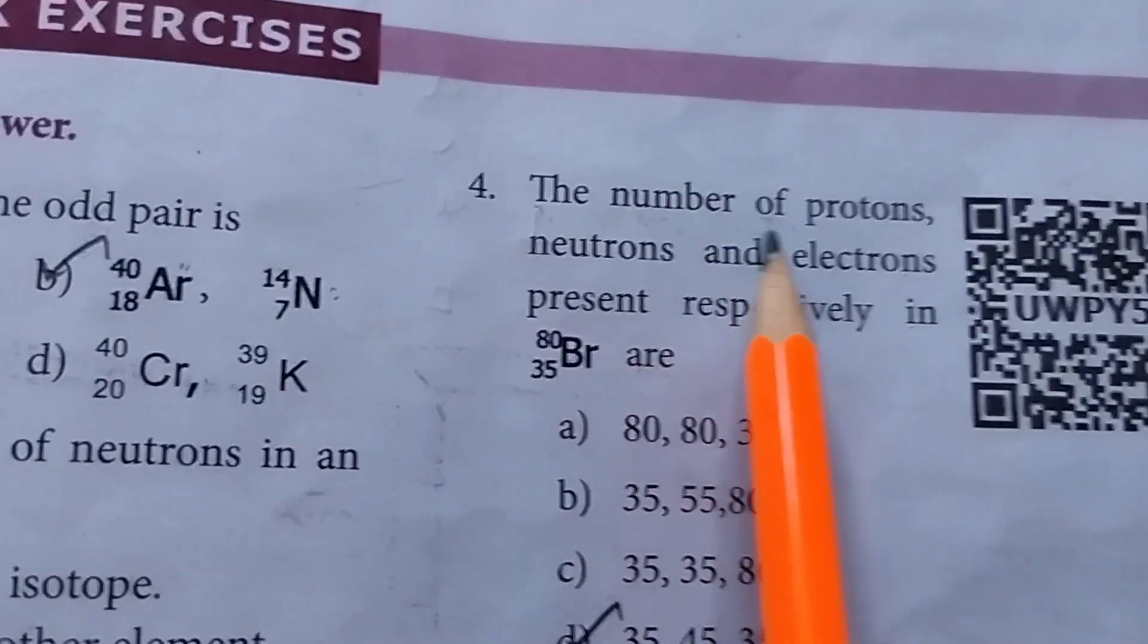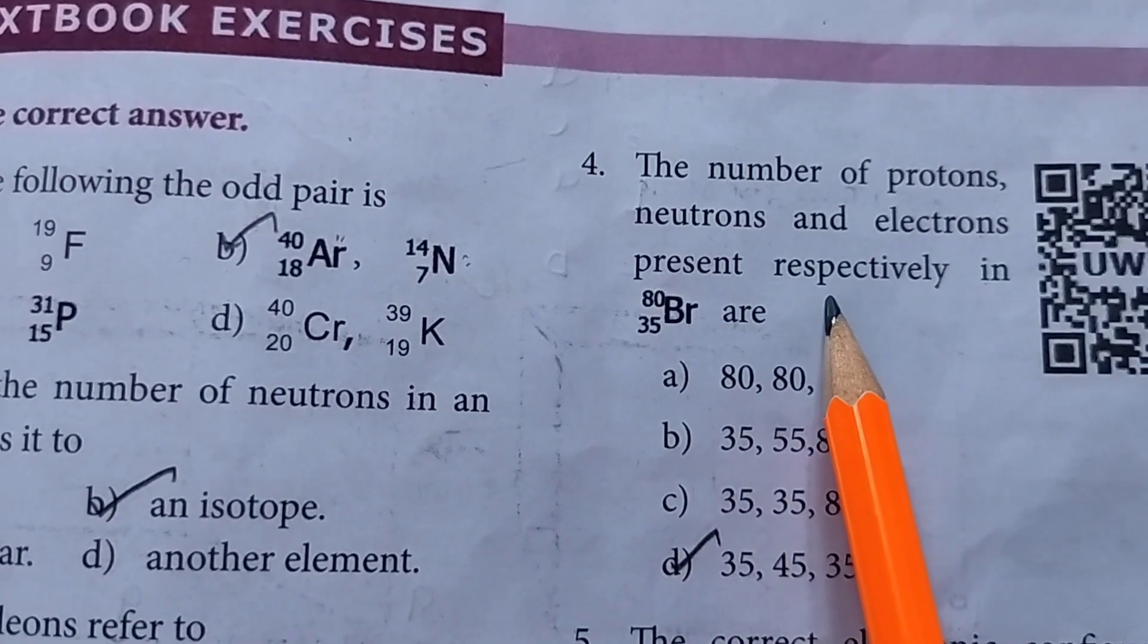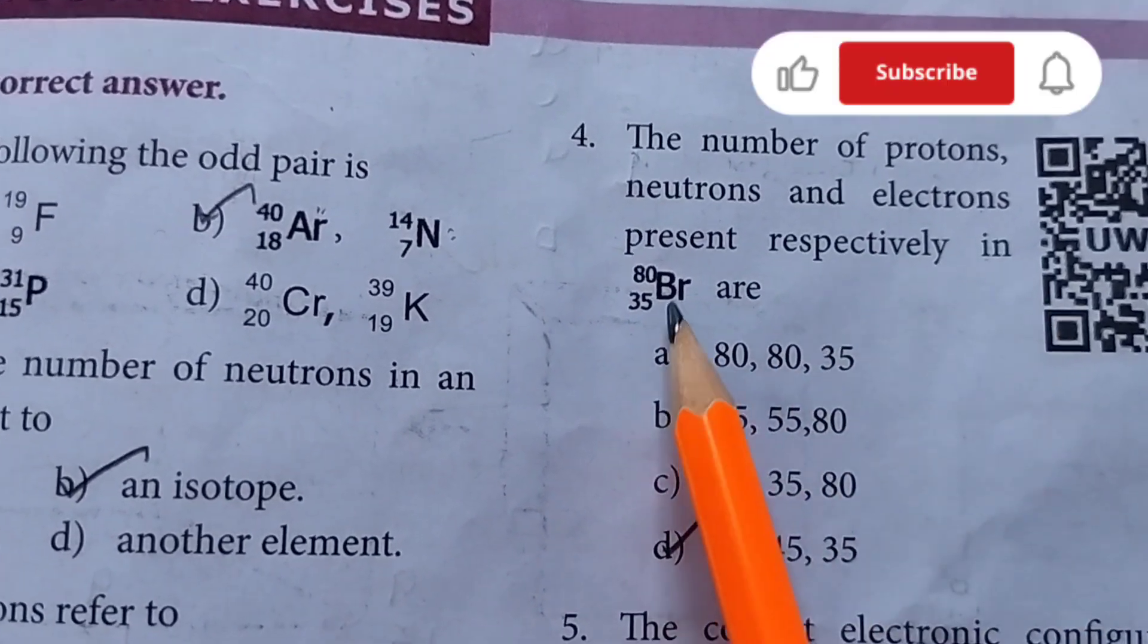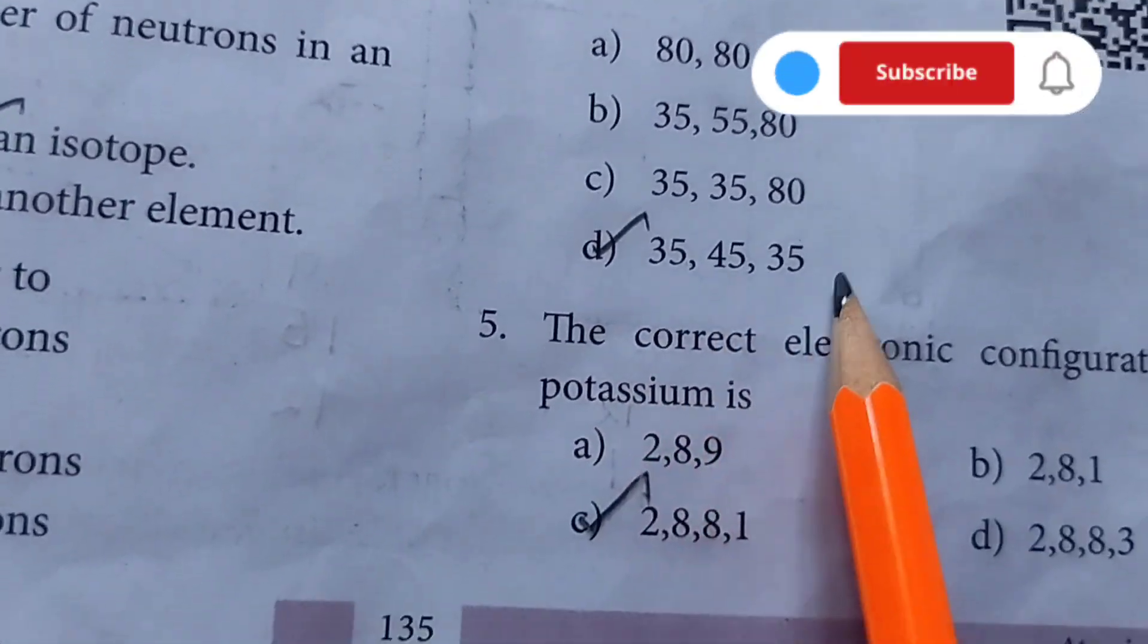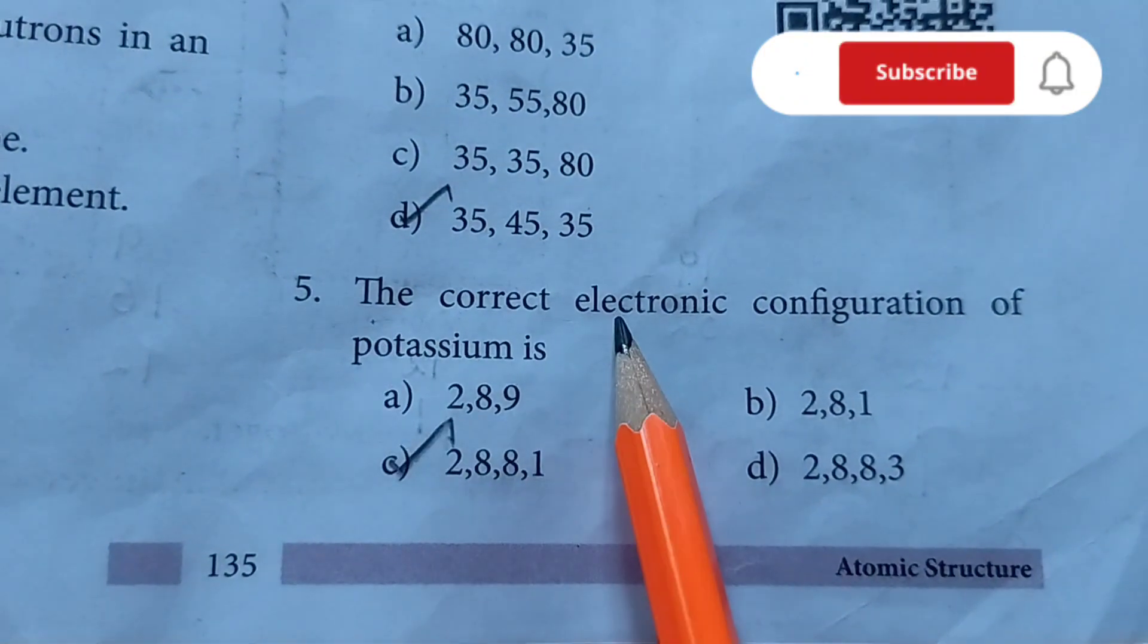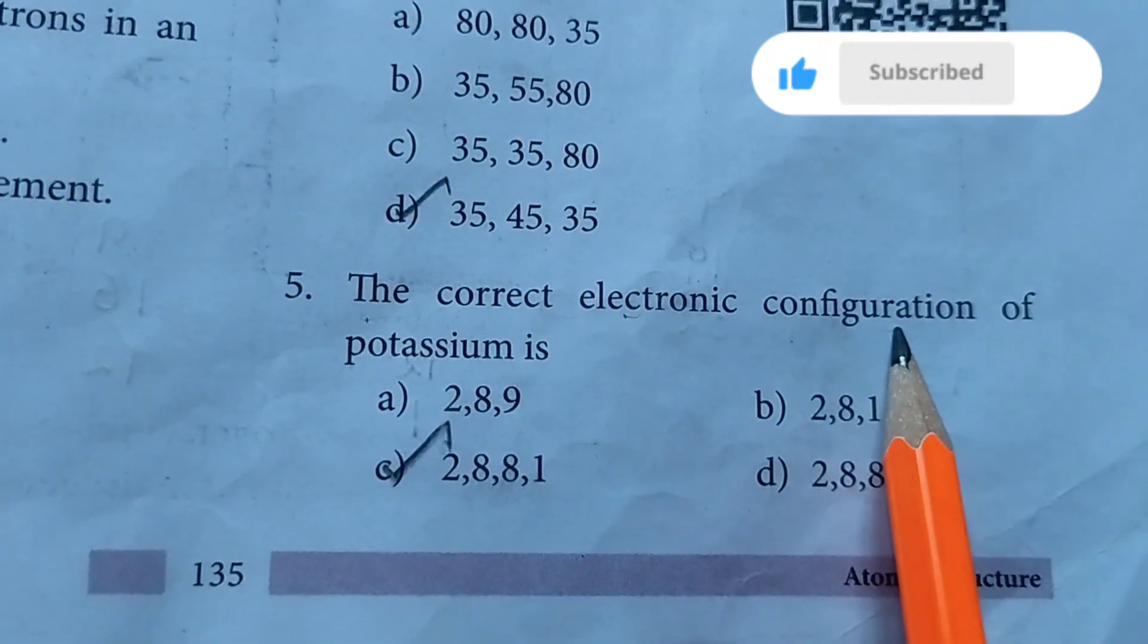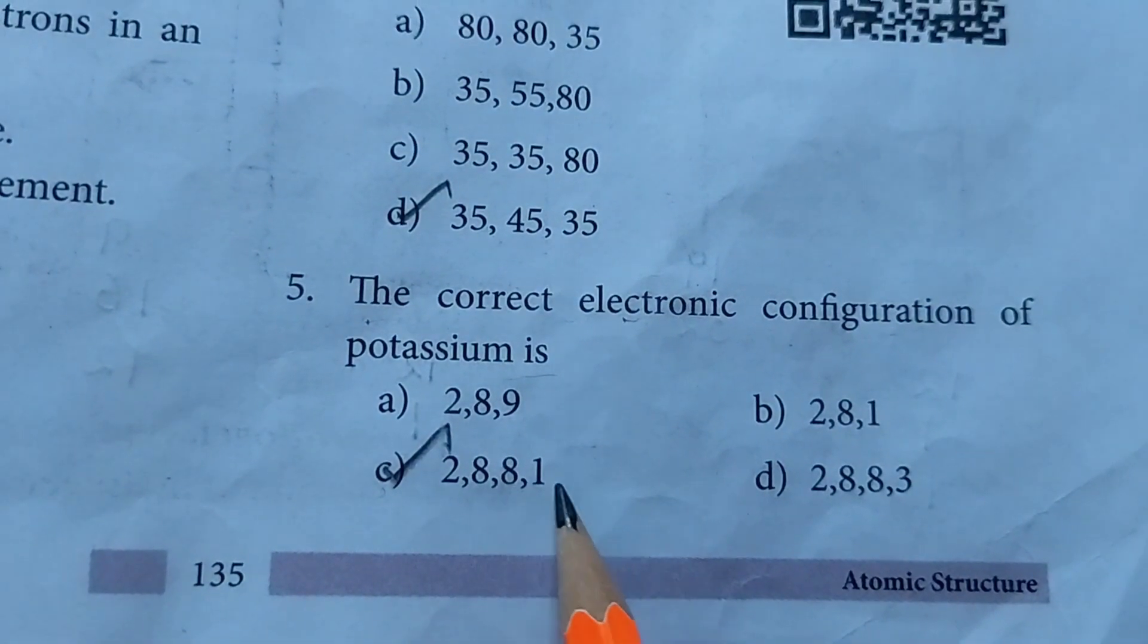Then fourth one the number of protons, neutrons and electrons present respectively in Br At 35 or option D 35, 45, 35. The answer then fifth one the correct electronic configuration of potassium is option C 2881.